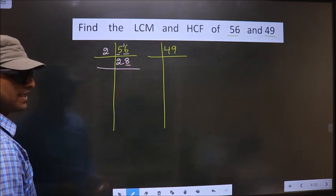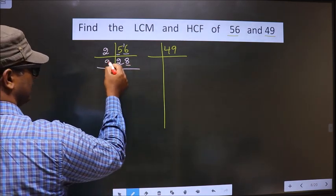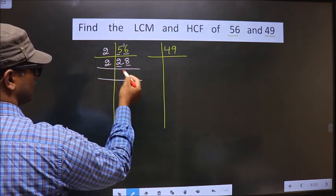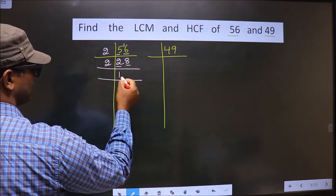Now, for this number, the last digit is 8 which is even, so we take 2 here. First number is 2. When do we get 2 in the 2 table? 2 times 1 is 2.